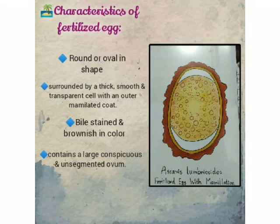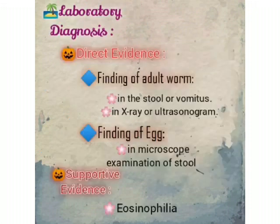Characteristics of the fertilized egg: they are round or oval in shape, surrounded by a thick smooth transparent shell with an outer mammillated coat, unstained and brownish in color, and contain a large unsegmented ovum. Laboratory diagnosis: direct evidence includes finding of adult worm in the stool or vomitus, X-ray or ultrasonogram findings, and finding of eggs on microscopic examination of stool. Indirect evidence includes use of serological tests.